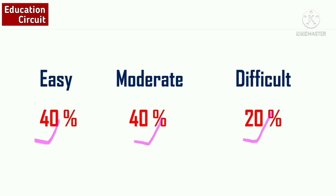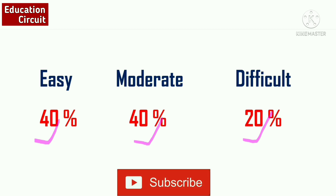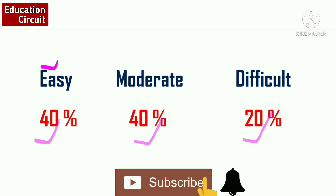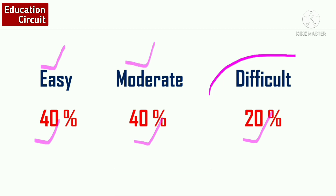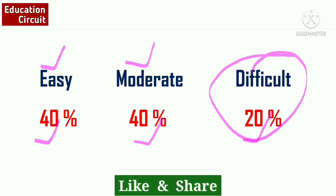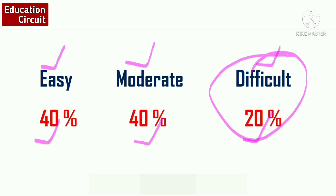We ignore the remaining 82 questions — we're not concerned about the easy or moderate portions, only the difficult portion. We keep putting effort into preparing that difficult section and spend a lot of time on it, while neglecting the other portions.